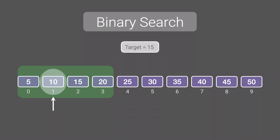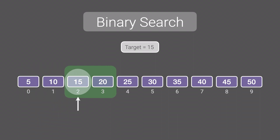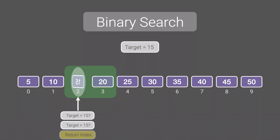For our new search area, the middle index is 1, which is where the value 10 lies. We ask if our target 15 is less than 10. Since 15 is not less than 10, we ask if 15 is greater than 10. Since it is, we explore the values after 10. Our new middle index is 2, where 15 lies. We ask if our target is less than 15 — it's not. We ask if it's more than 15 — it's not either. So our target must be 15, and we simply return index 2.